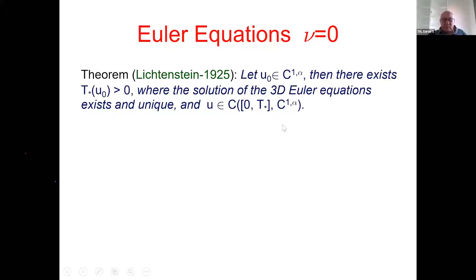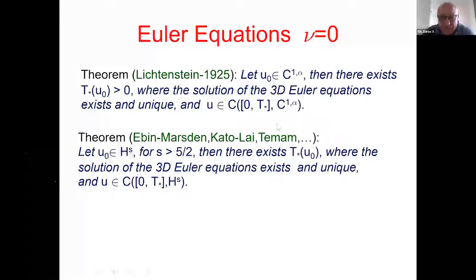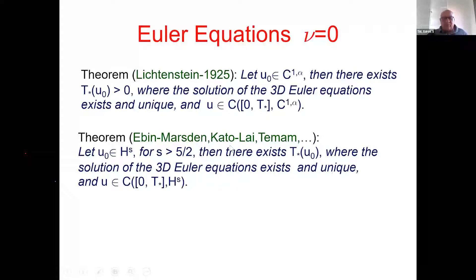There is work by Ebin-Marsden and results by Kato-Lai concerning domains with boundary, showing that initial data in H^s for s > 5/2 gives short-time existence and uniqueness. This is the modern functional-analytic approach versus the classical spaces approach, but H^s with s > 5/2 and C^{1,α} are intimately related — it is essentially the same result written in different mathematical languages.